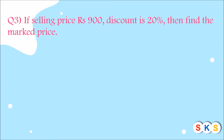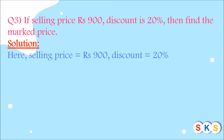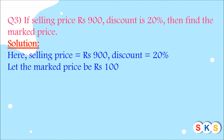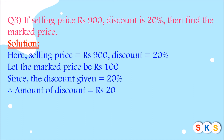Question 3: If the selling price is rupees 900 and discount is 20 percent, find the mark price. 20 percent discount means if the mark price of the article is rupees 100, then the discount will be rupees 20. So let the mark price be rupees 100 — since the discount given is 20 percent, the amount of discount is rupees 20. Selling price equals 100 minus 20, that is rupees 80.